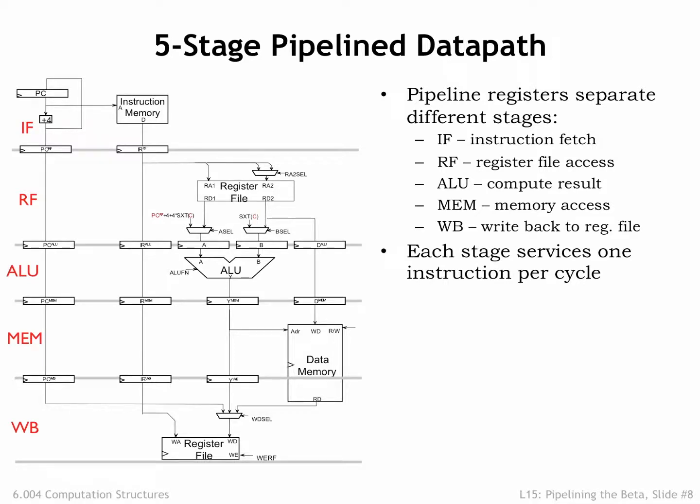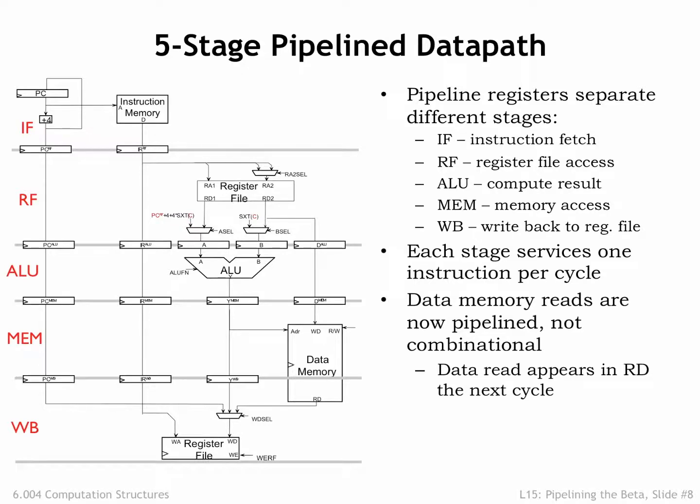In each clock cycle, each stage does its part in the execution of a particular instruction. In a given clock cycle, there are five instructions in the pipeline. Note that data accesses to main memory span almost two clock cycles. Data accesses are initiated at the beginning of the MEM stage, and returning data is only needed just before the end of the WB stage. The memory itself is pipelined and can simultaneously finish the access from an earlier instruction while starting an access for the next instruction.